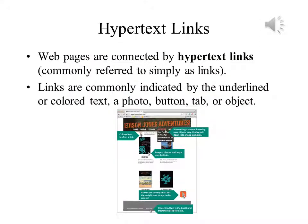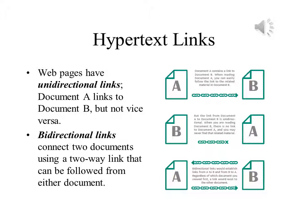The links in a web page can be more properly referred to as hypertext links, because they are based on the same keyword-oriented idea of Ted Nelson's. The links embedded in the page can be seen as underlined or colored differently from the rest of the text that surrounds it. Similarly, a link can be a picture, a button, a tab, or an object in some sense of the word. The page shown in the slide gives a few examples of this. Web links can be unidirectional or bidirectional. A unidirectional link connects document A to document B, but not the other way around. Bidirectional links connect both documents to each other.